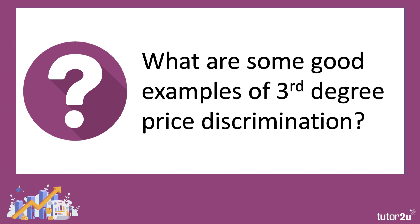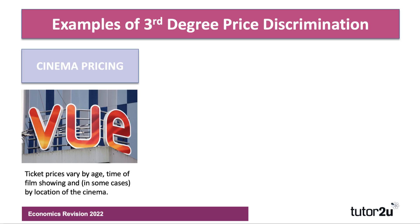Some examples include things like theatres and cinemas. The ticket price for someone like a film showing at Vue will vary perhaps by age. There might be a discount for senior citizens. The price might vary by time of film showing, and in some cases the ticket price might vary by the location of the cinema where income levels might be different.